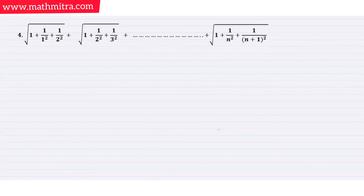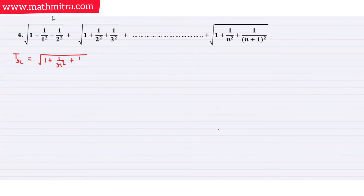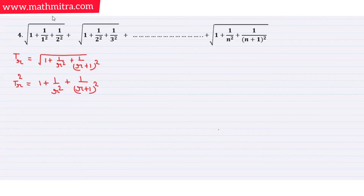Now our last series: something like 1 + 1/(1²×2²) + 1/(2²×3²) and so on. To solve this, we first write the general term Tr = 1/(r²(r+1)²) and simplify it. We square both sides and expand.